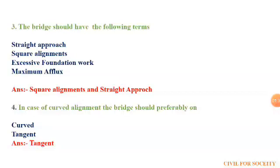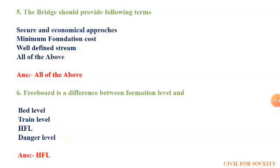The fourth question: in case of curved alignment, the bridge should preferably be on. The options are curve and tangent, and the correct answer is tangent. The fifth question: a bridge should be provided with the following terms. The first option is secure and economical approaches, second is minimal foundation cost, third is well-defined stream, and fourth is all of the above. The correct answer is all of the above.